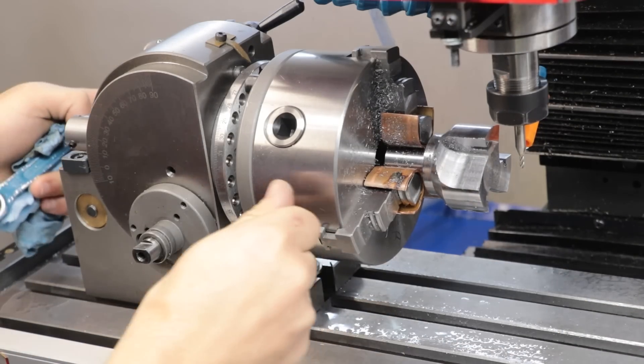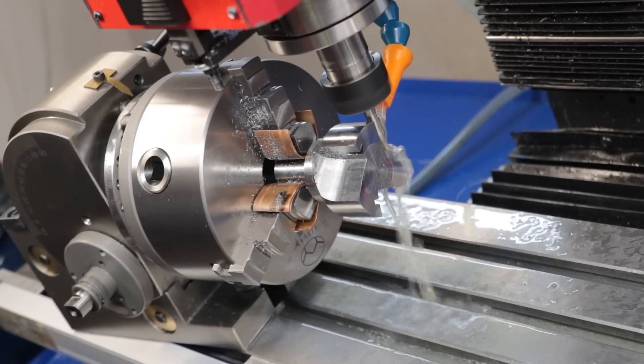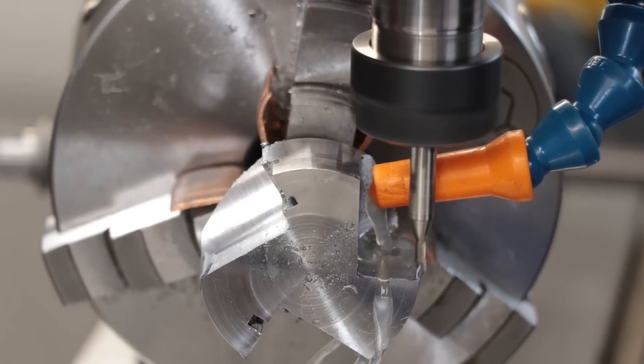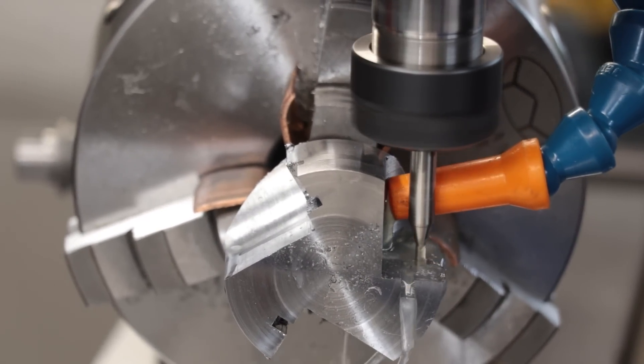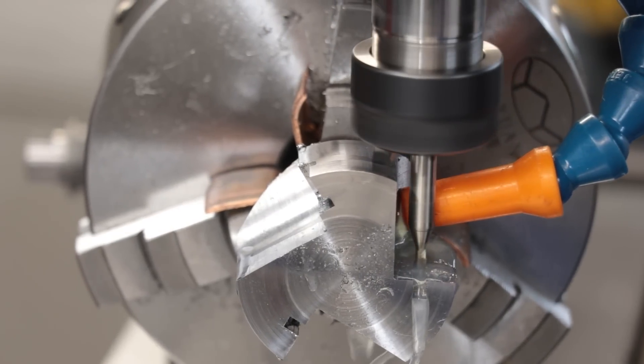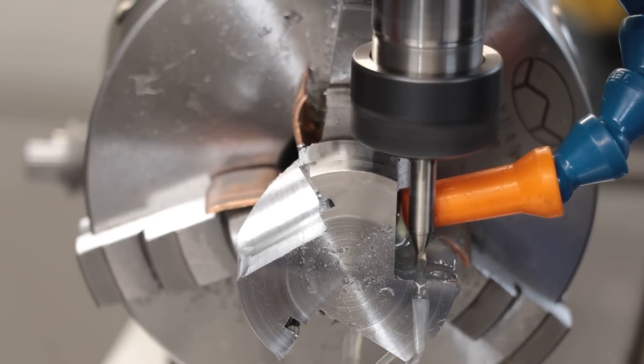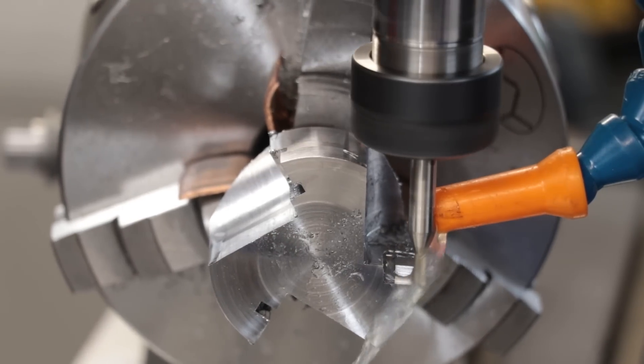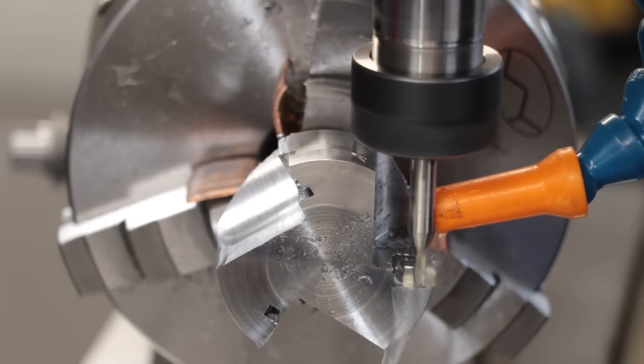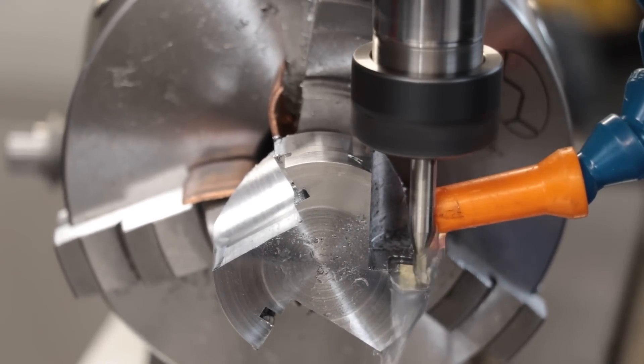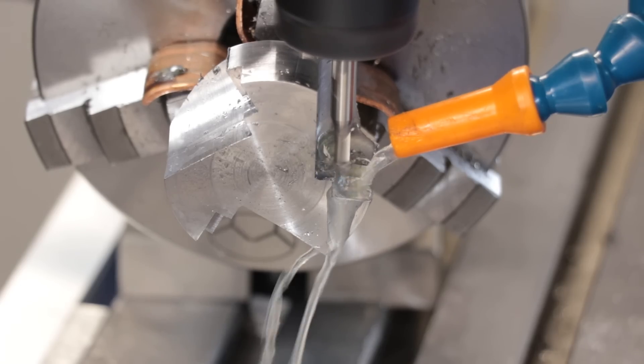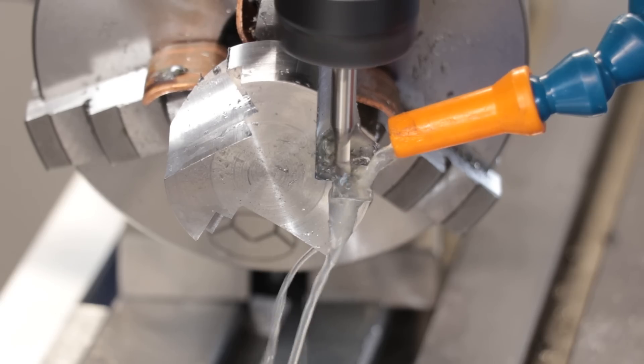Now to cut the second side, I will need to rotate the dividing head. Now because these cutters do leave a small radius, I will need to make a small relief cut in the corner. And that's as simple as plunging down with an end mill.